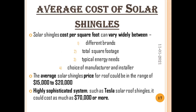Now let's discuss the average cost of a solar shingle. Solar shingle cost per square foot can vary widely between different brands. Your overall solar panel shingle cost will depend on the total square footage, typical energy needs, and your choice of manufacturer and installer. The average solar shingle price for your roof could be in the range of $15,000 to $20,000. But if you choose a highly sophisticated system such as Tesla solar roof shingles, it could cost you as much as $70,000 or even more.